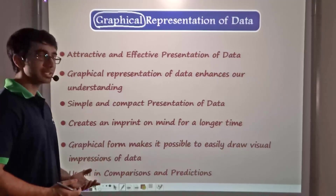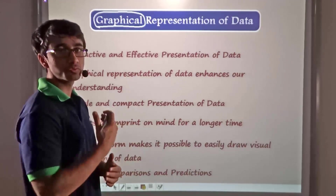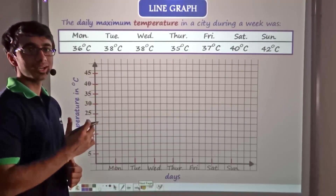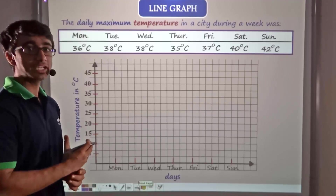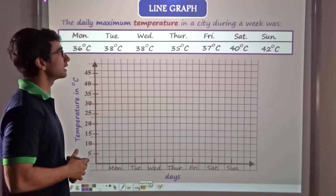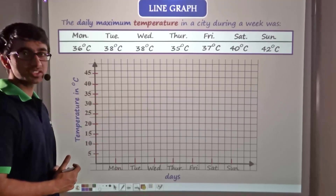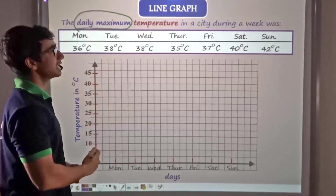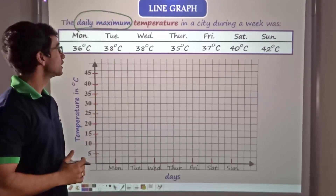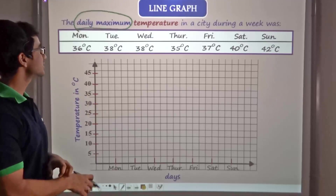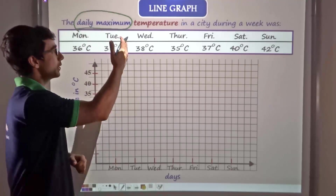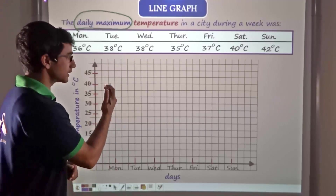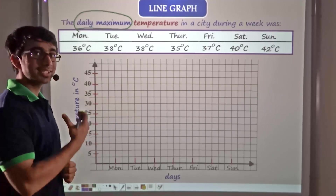Lastly, it is useful in comparisons and predictions, as we shall soon find out. So firstly we will discuss about a line graph. A line graph is a kind of graph which is used to represent data. Here we have been given a set of observations for a particular week — the daily maximum temperature in a particular city has been given for a week. For Monday it is 36 degrees Celsius, Tuesday 38 degrees Celsius, Wednesday 38 degrees Celsius, and so on. I have to plot this data on the graph provided.